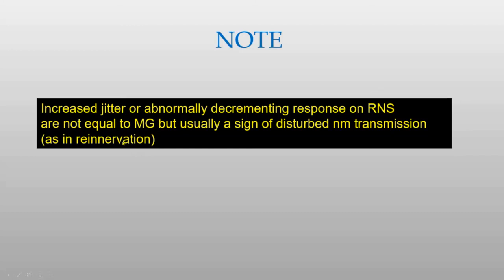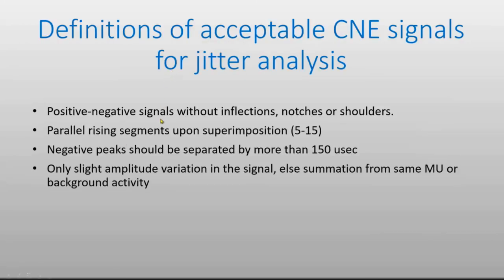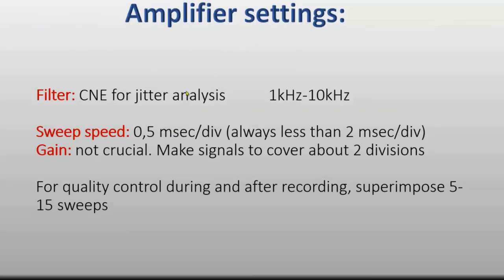Here is a summary of signals to be accepted: they should have a positive-negative inflection without notches or shoulders, meaning a parallel rising segment. The negative peaks should be separated for accurate measurements, and a slight amplitude variation is acceptable. The amplifier filter setting is 1 kHz to 10 kHz. A sweep speed of 0.5 milliseconds per division is good for detecting small changes, and the gain should make the signal cover about two divisions on screen. Superimpose 5 to 15 sweeps.